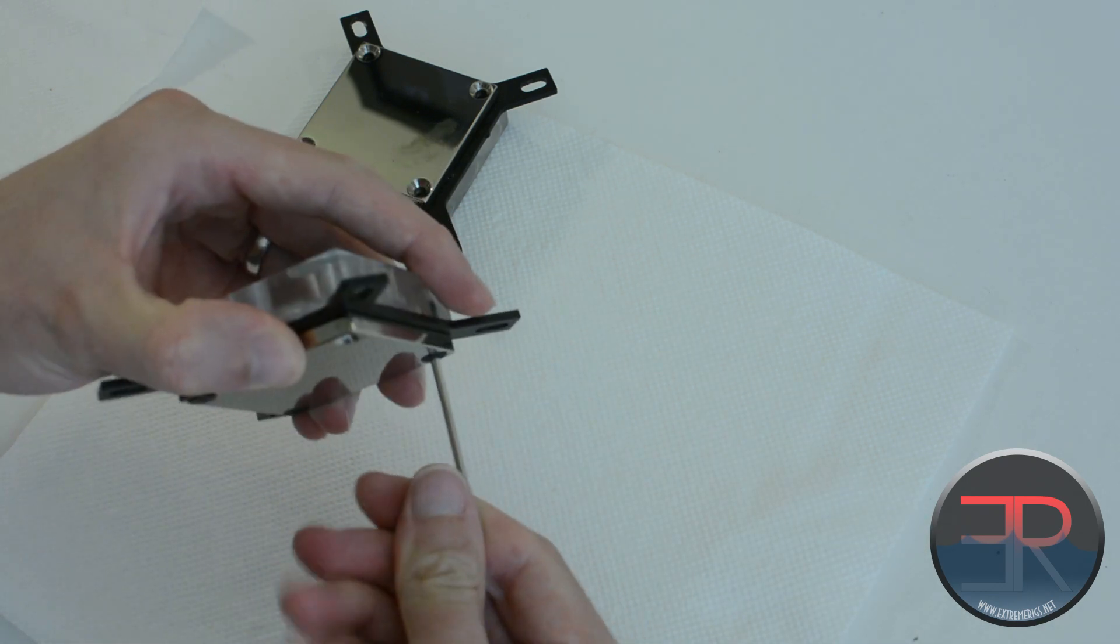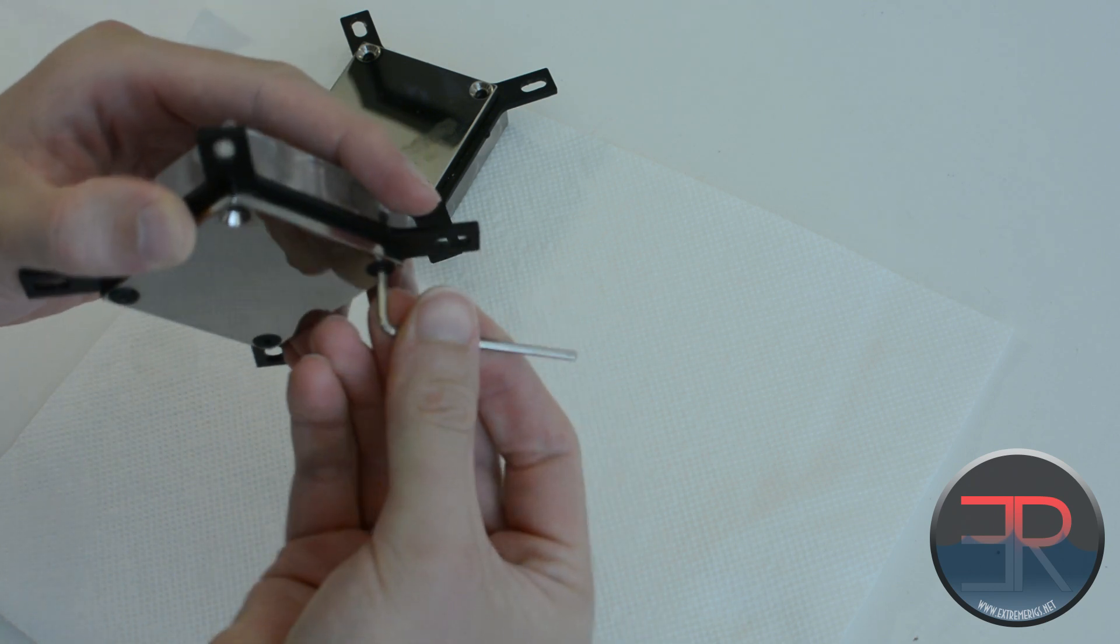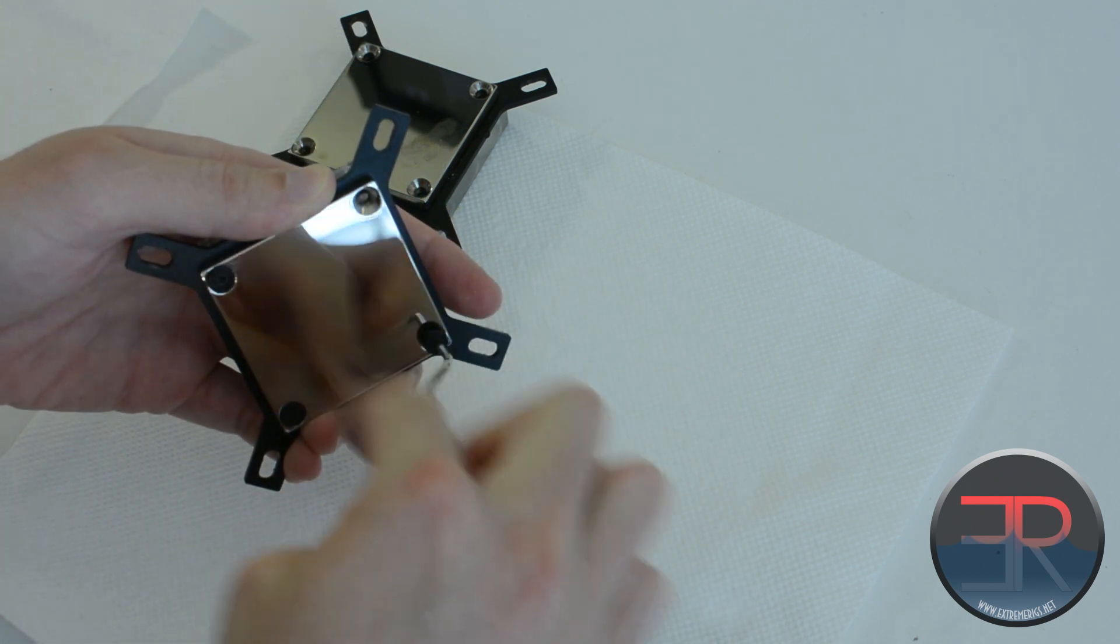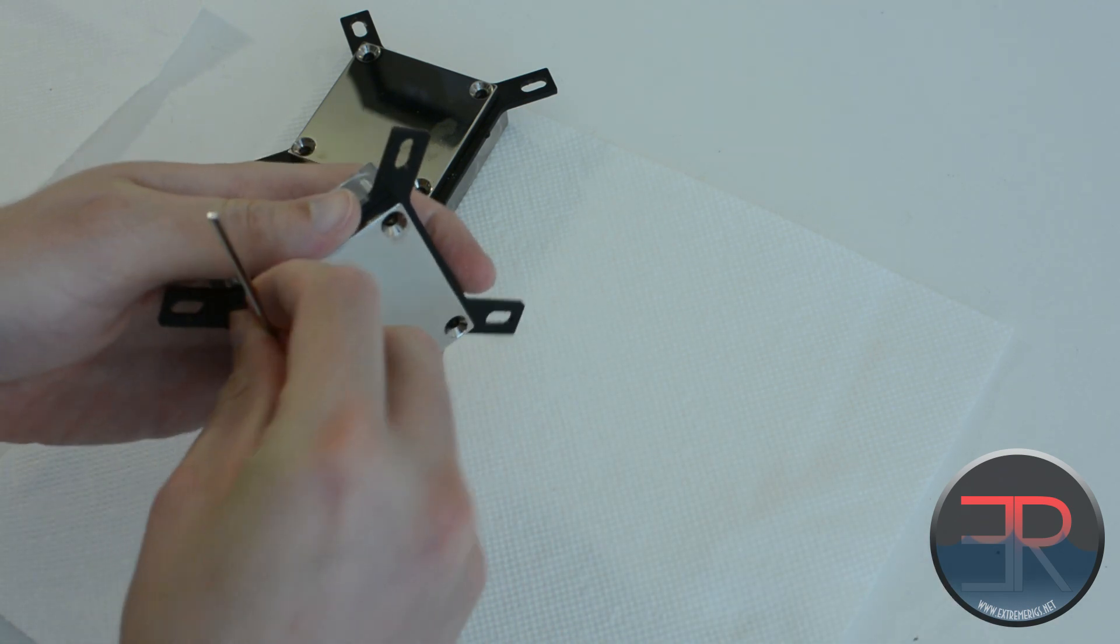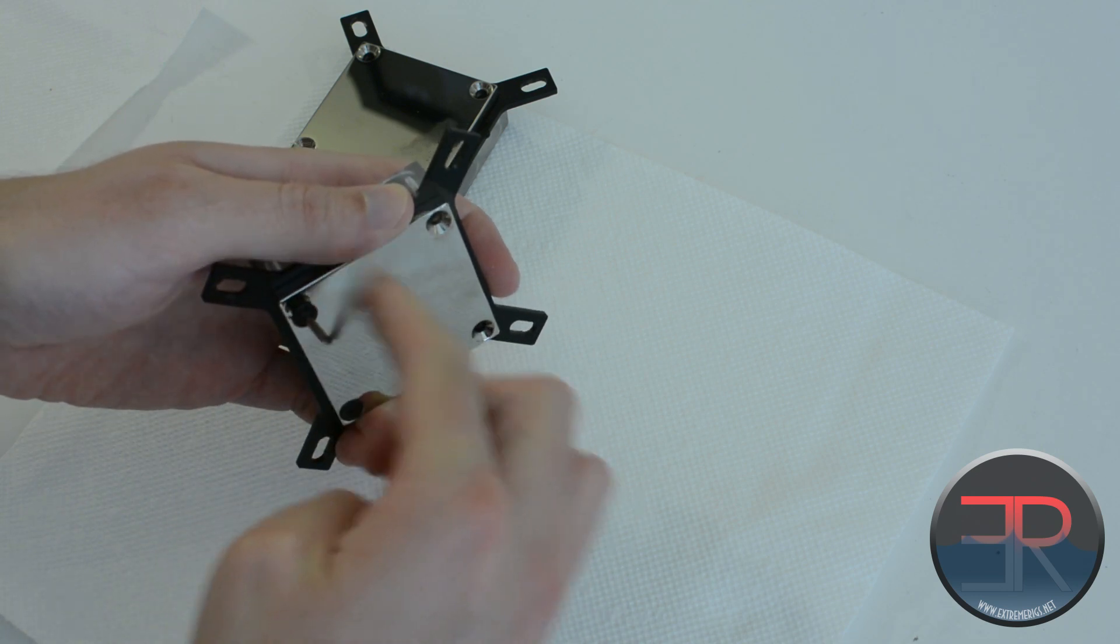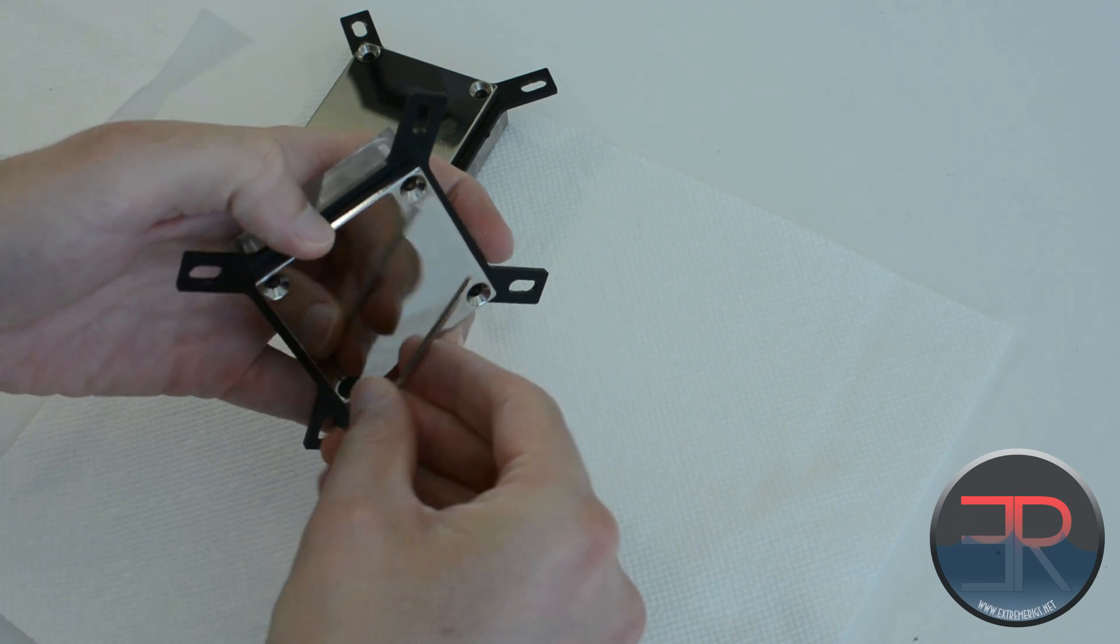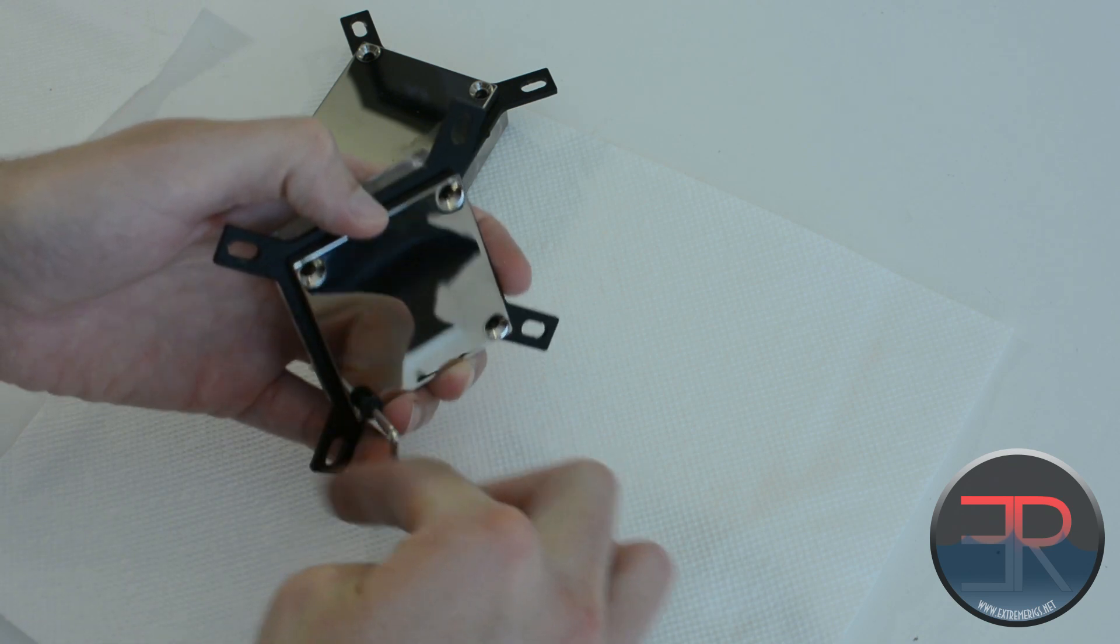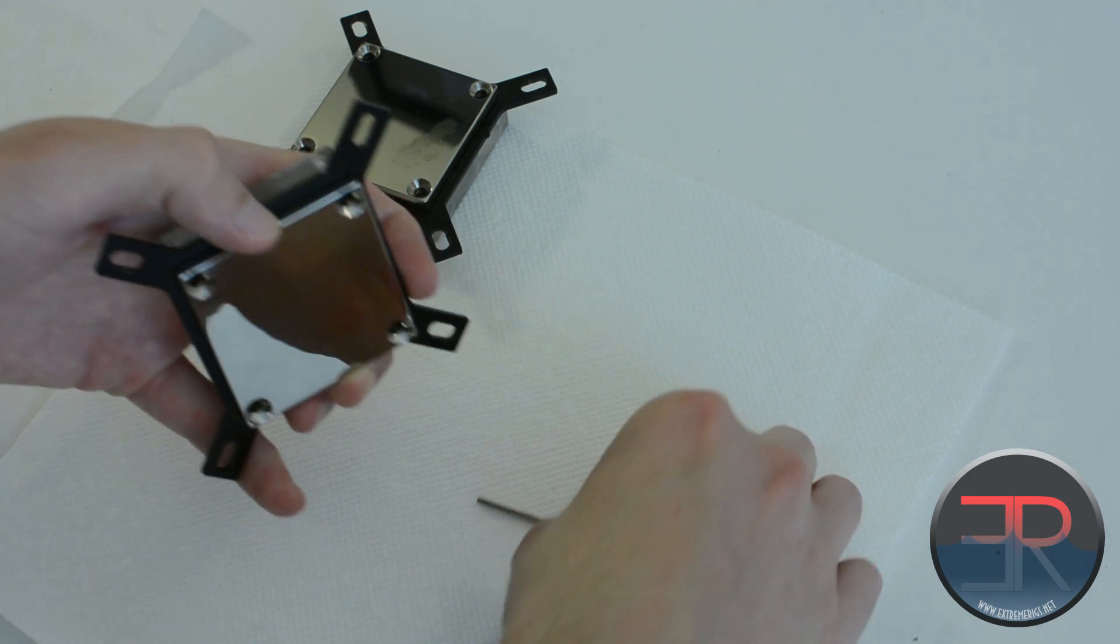So as we undo the EVO, you'll see there is still a similar jet plate. You'll see even these screws are the same. So the interesting thing is, EK will be selling conversion kits. So if you have an old Supremacy and you want to convert it to the Supremacy EVO, you can buy a kit to do that, at least for the first few months.